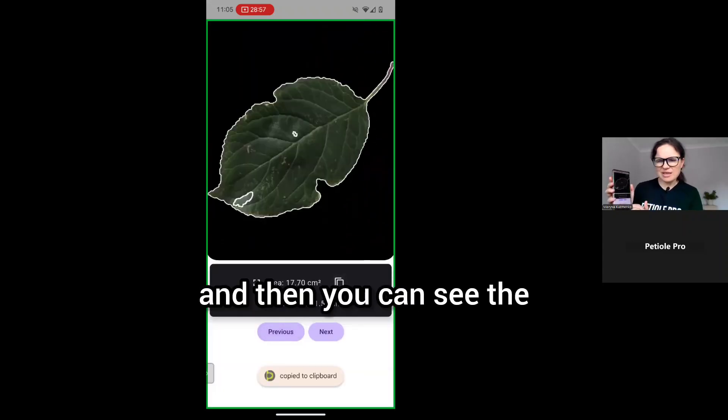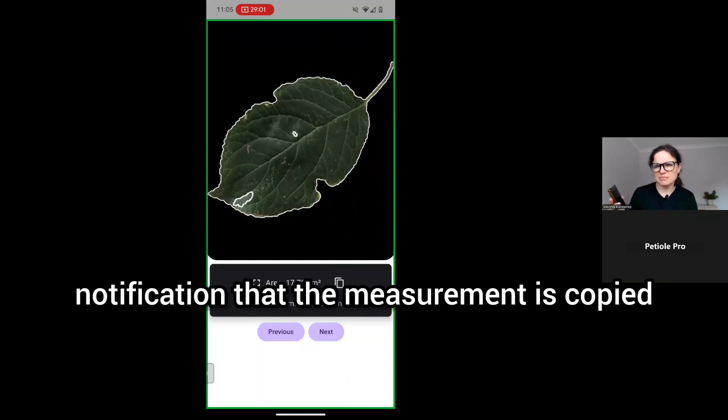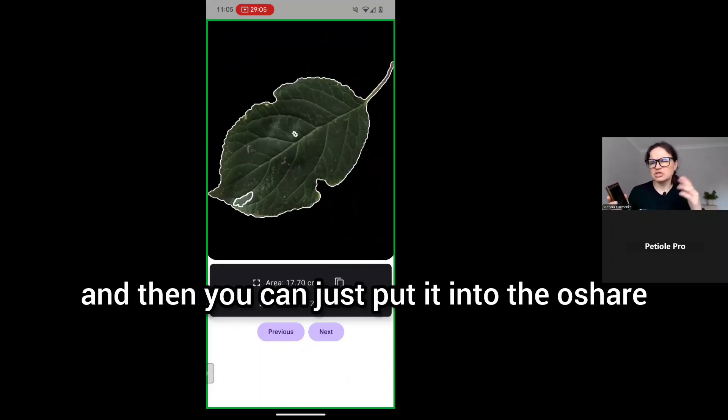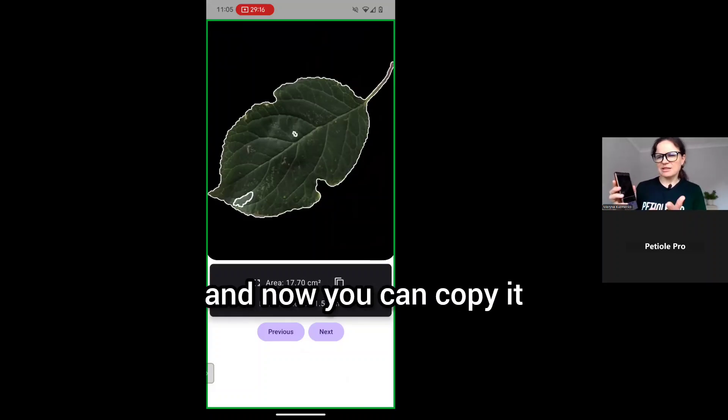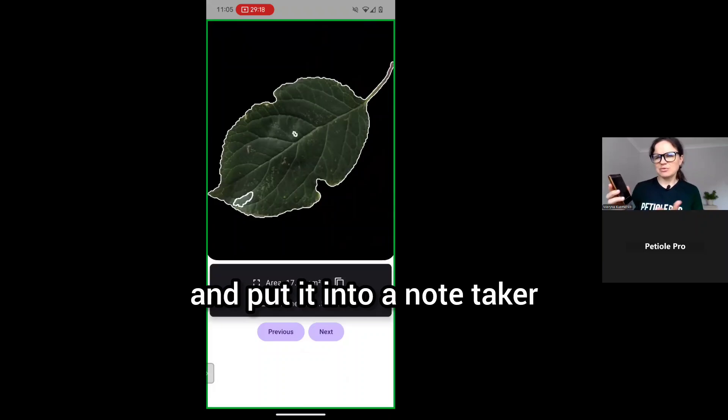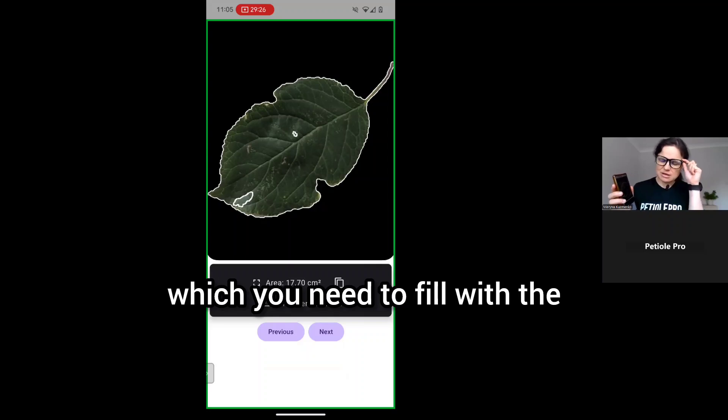You can copy them and then you can see the notification that the measurement is copied. Then you can just put it into Excel using the clipboard, right. Now you can copy it and put it into a note taker. You can copy and paste it into your field which you need to fill with the measurements of the leaf area.